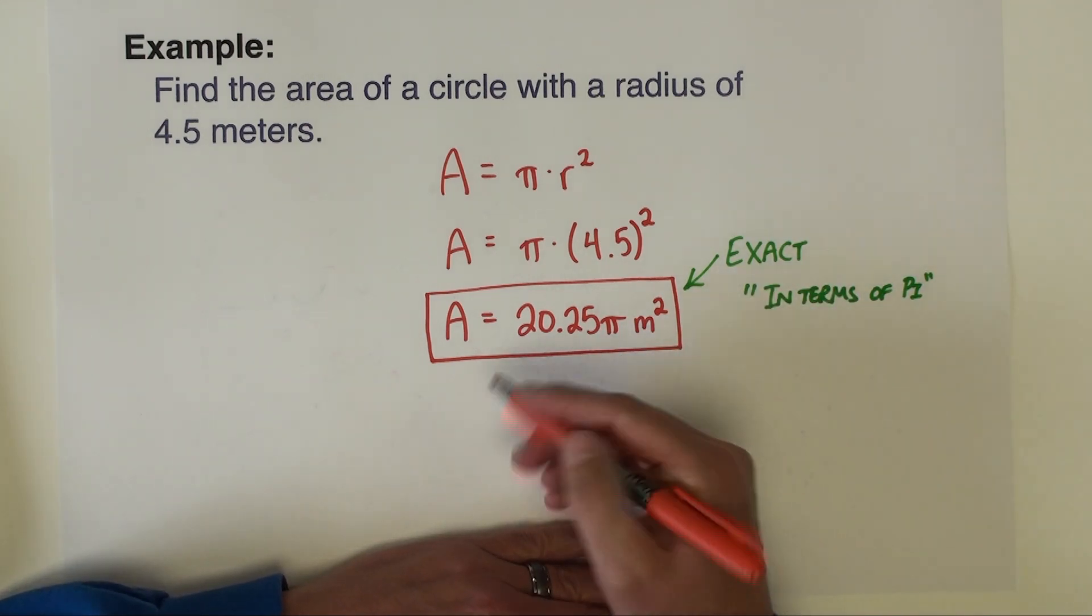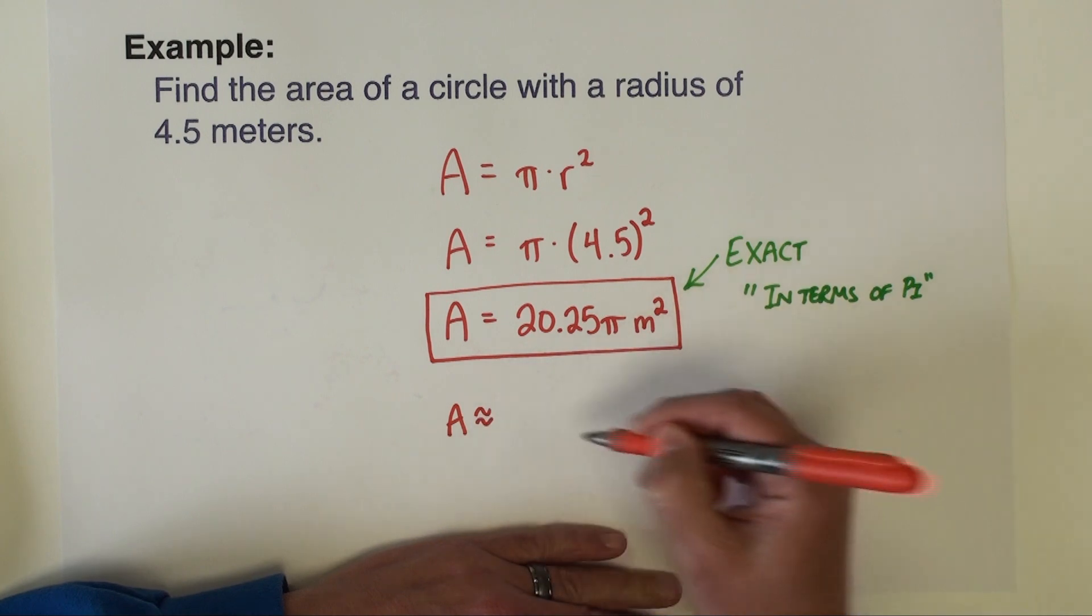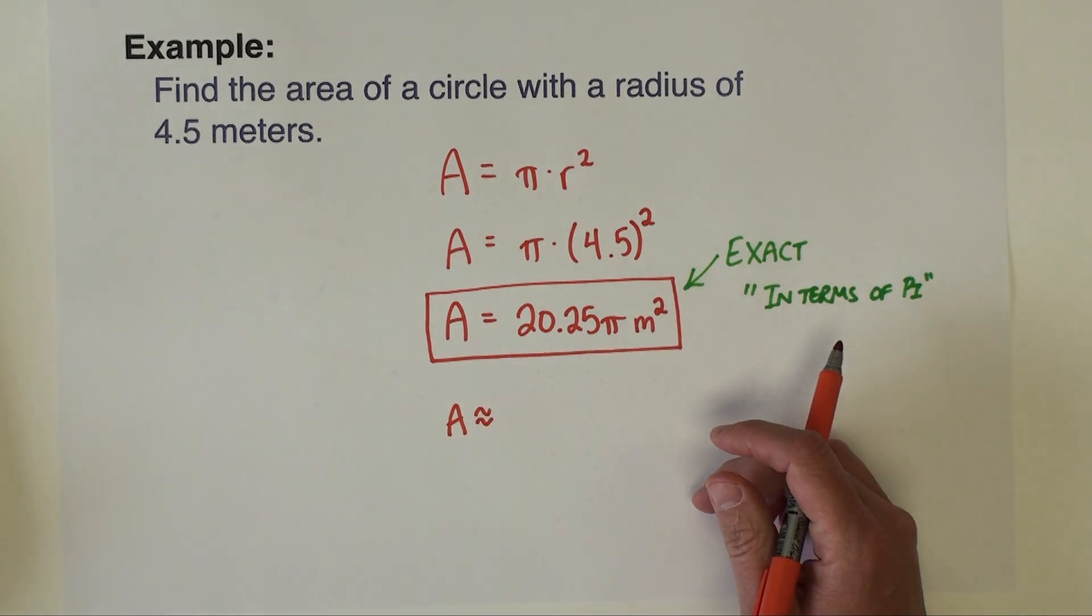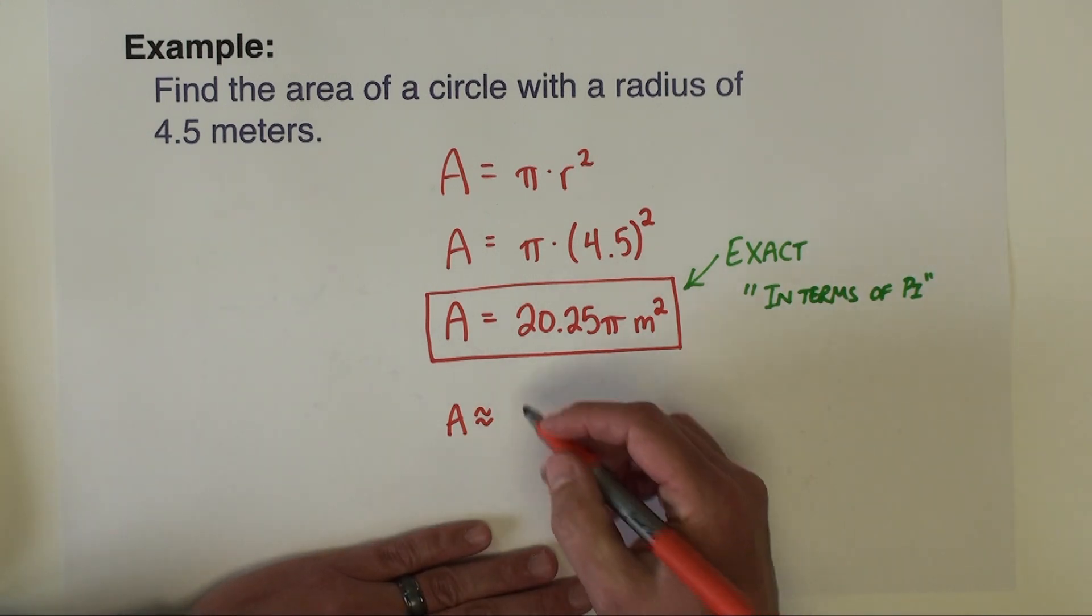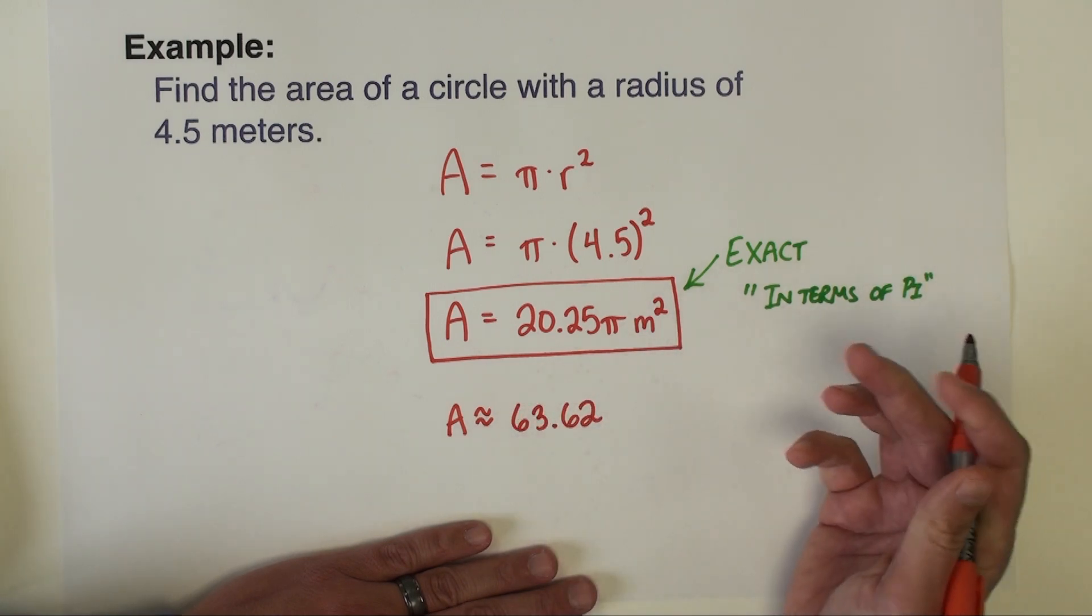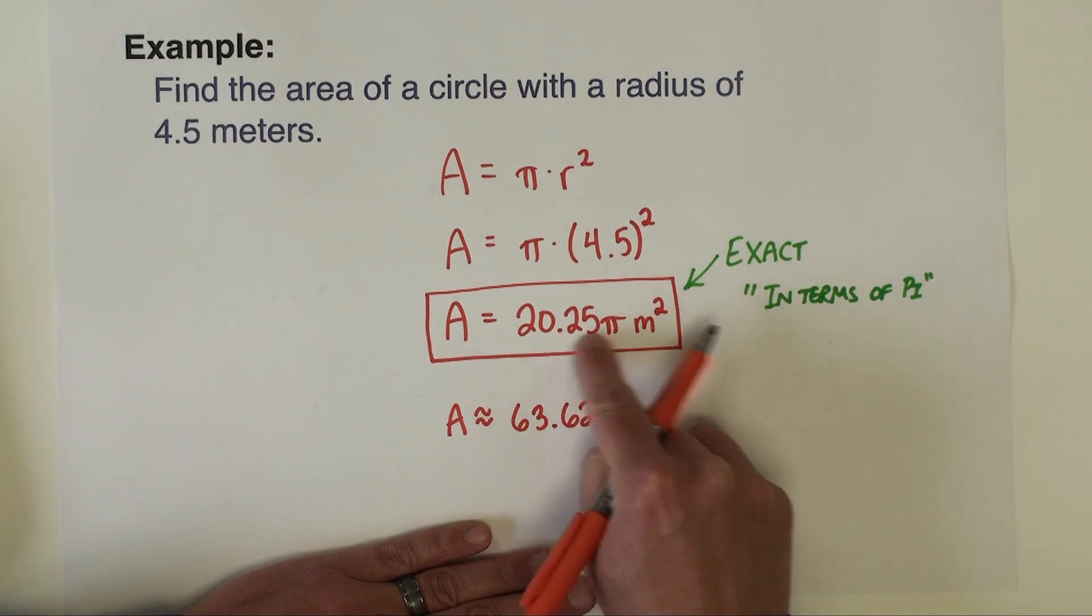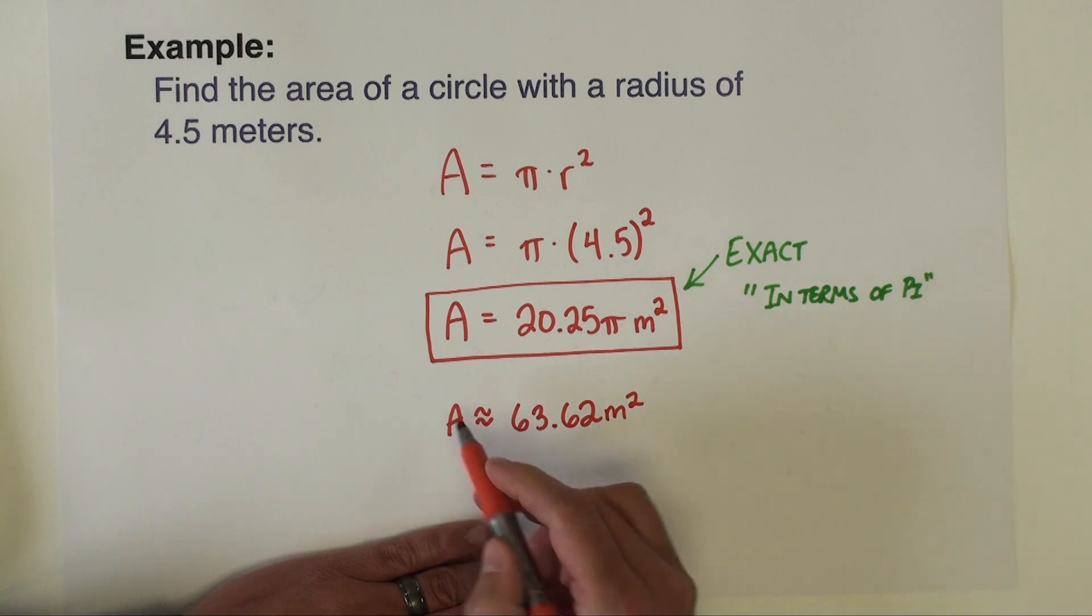If we want an approximate area, then we're just going to type 20.25 times pi and just use the pi button that's on the calculator. That gives me 63.62. So no pi anymore because we computed that in, but we are going to put our units meters squared.